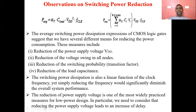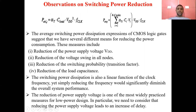The average switching power dissipation expressions of CMOS logic gates suggest several means for reducing power consumption. These measures include: reduction of the power supply voltage V_DD, reduction of the voltage swing at all nodes, reduction of the switching probability, and reduction of load capacitance. Reducing any one of these will reduce the average dynamic power.